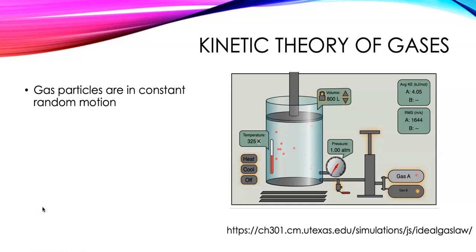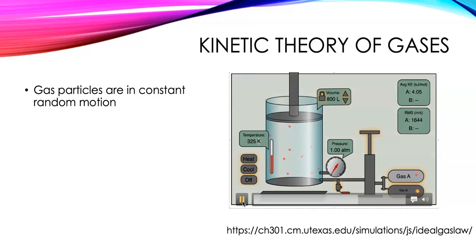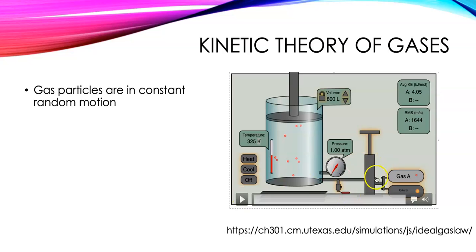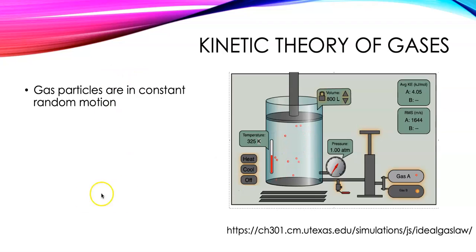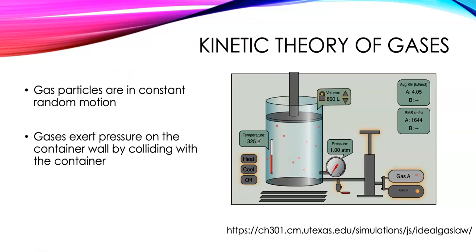Kinetic theory has a few statements that define the whole theory. It says that gas particles are in constant random motion. Here's a simulation from the University of Texas, and you can see how the particles are moving around randomly. They're moving in straight lines, and they collide with each other and with the container walls. When they collide with the container walls, that's how they exert pressure on the container.